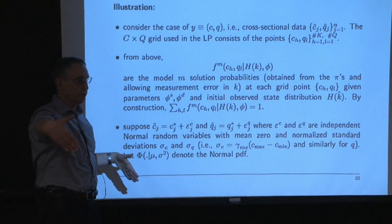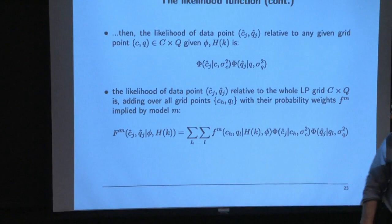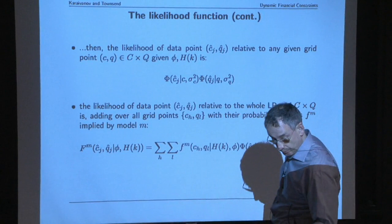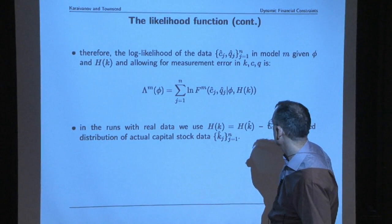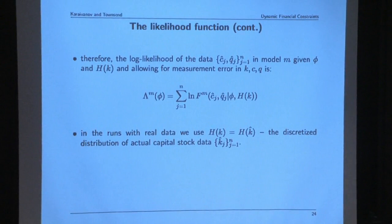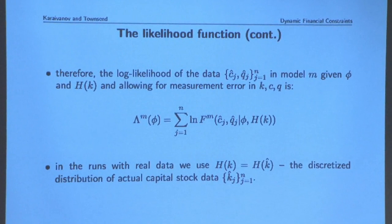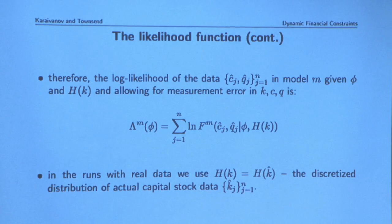We actually have the data, and we see people with a certain capital stock getting a certain output, having a certain consumption, and investing a certain amount. These are our observables; we see the histograms in the data. Now we have a histogram in the model. So we can ask: what parameters would best rationalize the data if the data came from that particular financial regime?